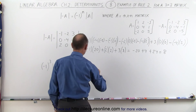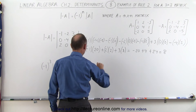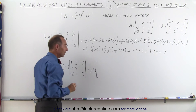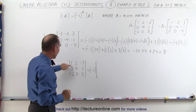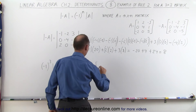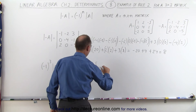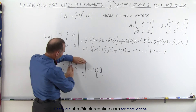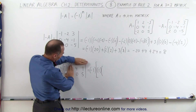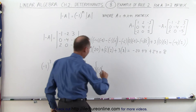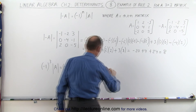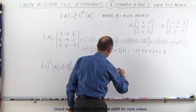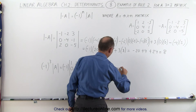So here we get negative 1 times — using a big bracket — the first element 1 times what's left when we cross out that row and that column, which is 4 times 5, minus the product of those two diagonals, which is 1 times 0.